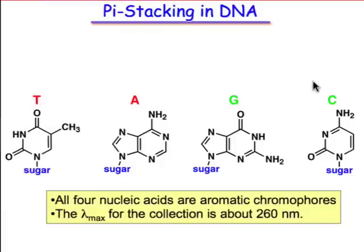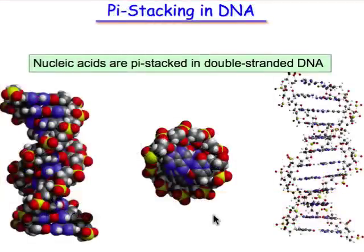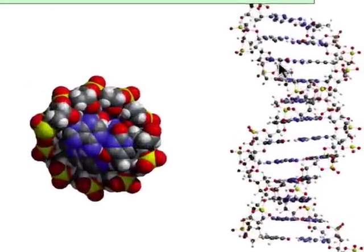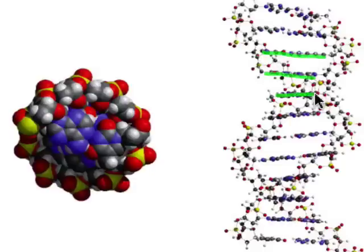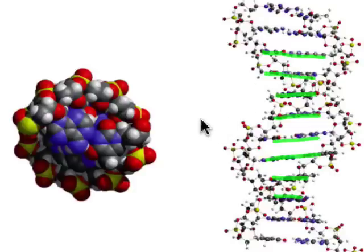Here is the structure of the DNA bases. Later on in the semester, we'll have entire lessons devoted to heteroaromatics, which is what these molecules are. All four of them are aromatic compounds that absorb around 260 nanometers. There's the familiar structure of deoxyribonucleic acids, and the repeating distance of about 3.3 angstroms corresponds to a side-on view of those stacked nucleic acids that are in the center of this double helix.